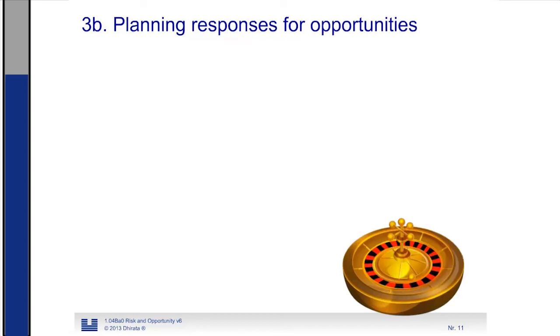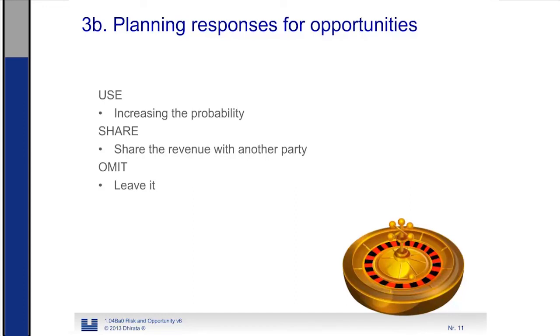The same can be done with opportunities. So we have three main groups. First we have use the opportunity. There we are going to try to increase the probability that the fortunate event actually will happen. If we would share the opportunity with other parties, we can persuade them to perform favorable actions that would help us to share this opportunity. Let's say you could have a kind of bonus system or a kind of incentive system for suppliers. And if this incentive system is there for suppliers, you can, for example, share savings. It would stimulate the supplier to do the work more efficient. And of course, the same like accepting, we could omit the opportunity. And there we leave it as it is.